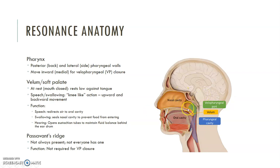The velum also has an additional role during hearing where it opens the eustachian tubes — we'll talk about that in the hearing lecture. It maintains the fluid balance behind the eardrum. So if you ever have fluid in your ears or your ears feel fuzzy, and you swallow hard, or if you're flying and need to pop your ears, when you swallow you're actually using your velum to open the eustachian tubes and restore that pressure balance in the middle ear.